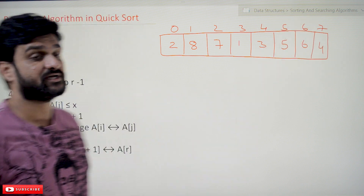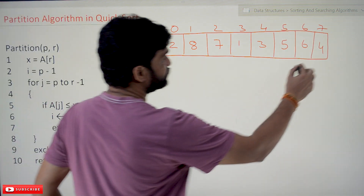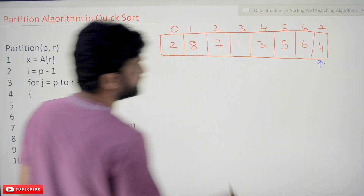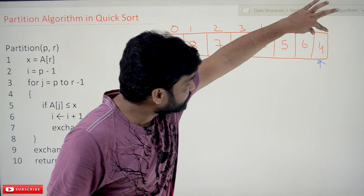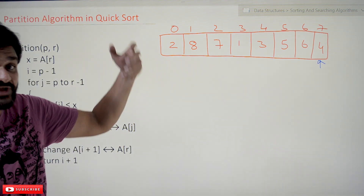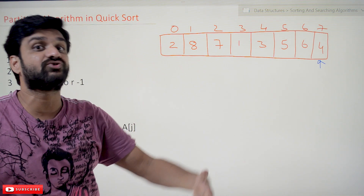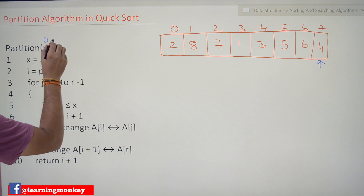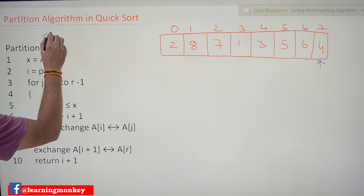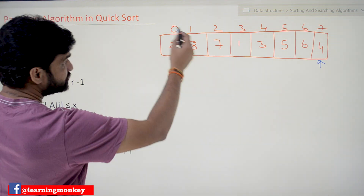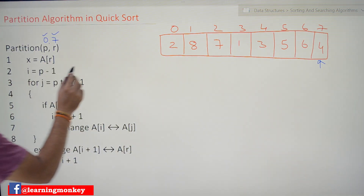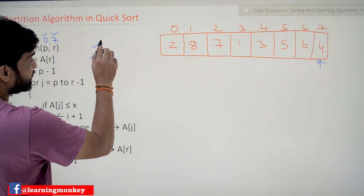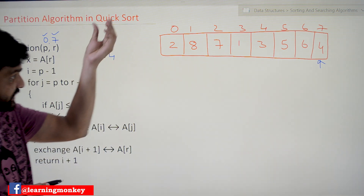The pivot element we are going to take is the last element of the array. We are going to identify the position for this pivot element, meaning it will get arranged into sorted order. Here the value of p is 0 and the value of r is 7 — the starting index and ending index of that array, so there are 8 elements. x is equal to a[r], which is 4, so this is the pivot element. For this element we are going to identify its position.